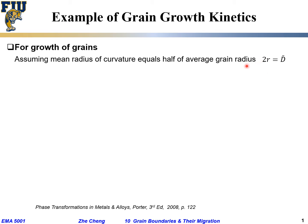For simplicity, let's assume radius of curvature equals the grain diameter, actually half of diameter. The radius of curvature for the grain is just half of your diameter, so 2r = D̄. I probably missed the factor of two here.